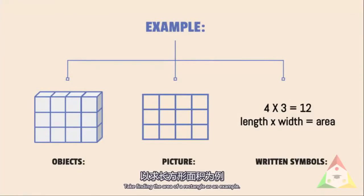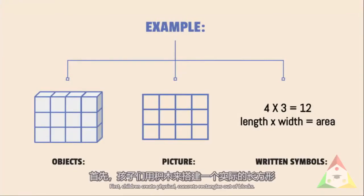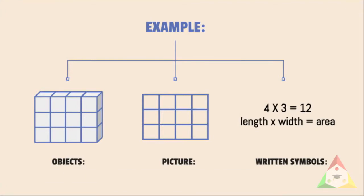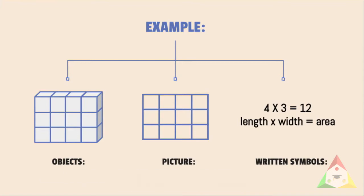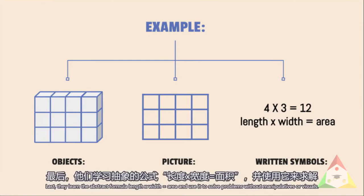So let's take finding the area of a rectangle as an example. First, children will create a physical concrete rectangle out of blocks. Then they'll draw the rectangles in a 2D format and look at pictures in the textbook. Last, they'll learn the abstract formula, which is length times width equals area, and they will use that to solve problems without using manipulatives or any visuals.